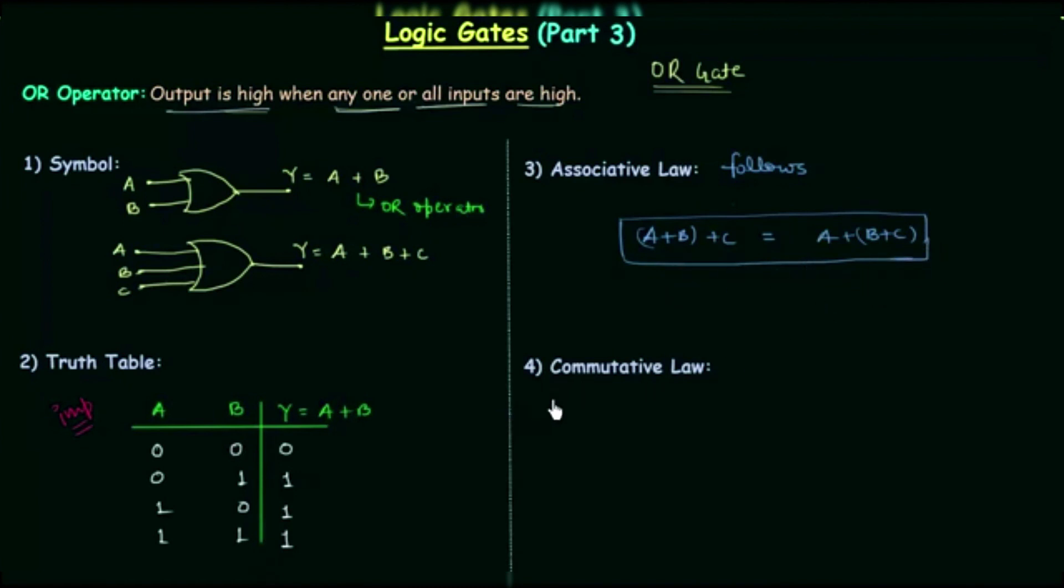Now we will move to fourth point that is commutative law. OR gate follows the commutative law and it says A OR B is equal to B OR A. Very simple. So OR gate follows the commutative law.